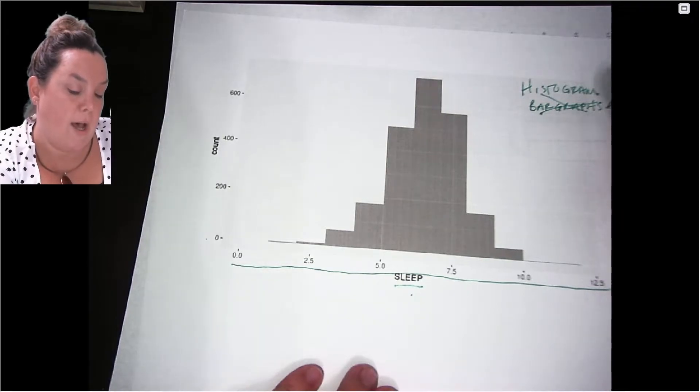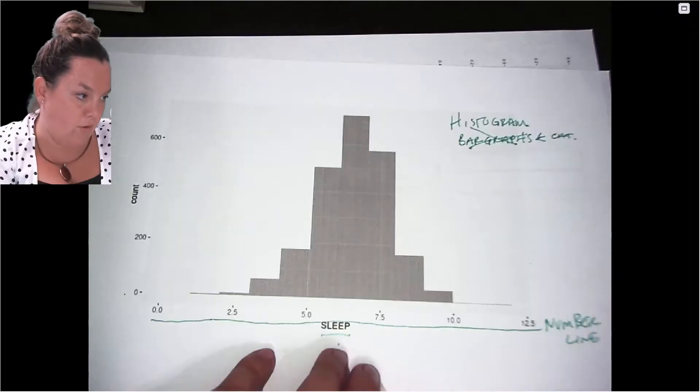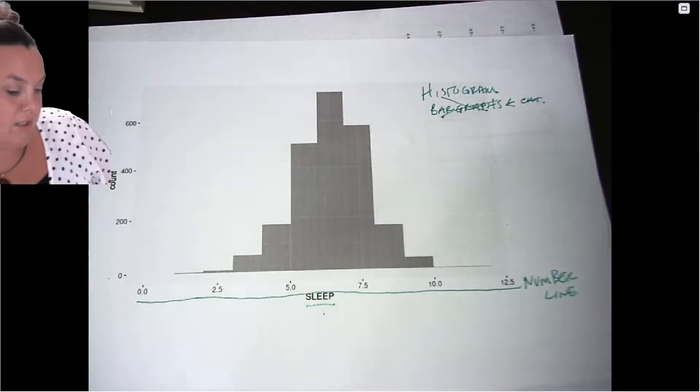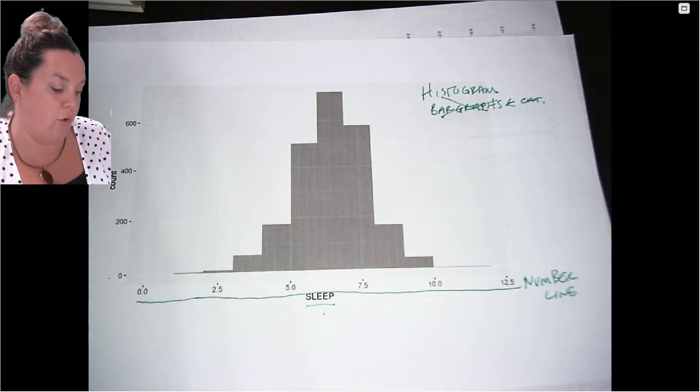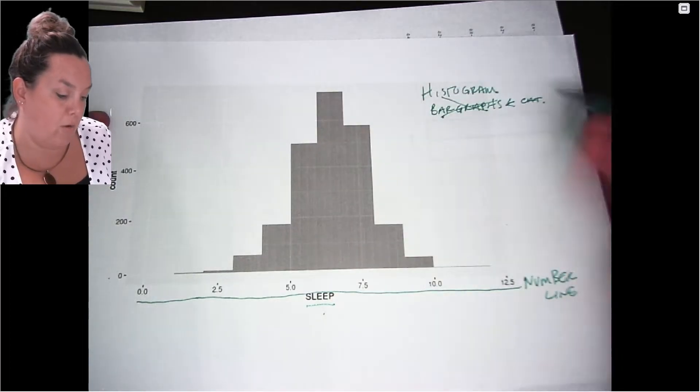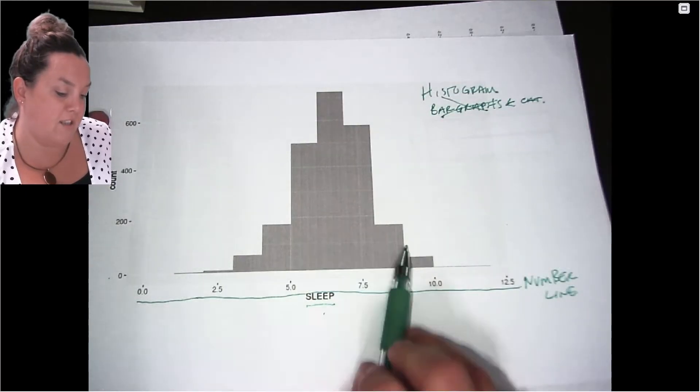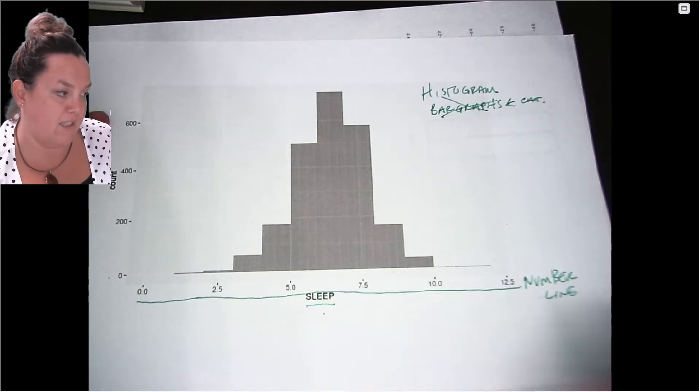Remember that a bar graph has an x-axis that has categorical variables or categories on it. So when you look at a bar graph you'll notice that the bars are separate. Here though with the histogram you'll notice that they touch one another, and again that's because it's on a number line.